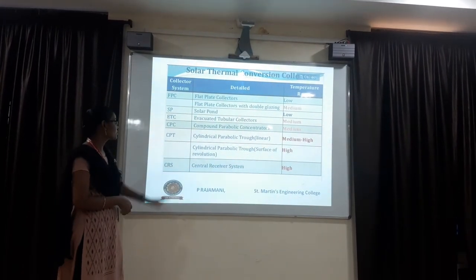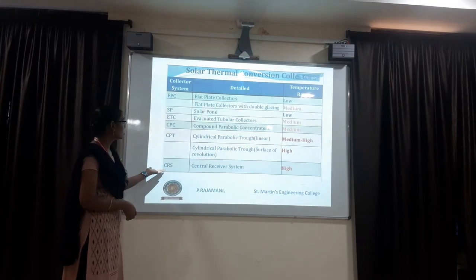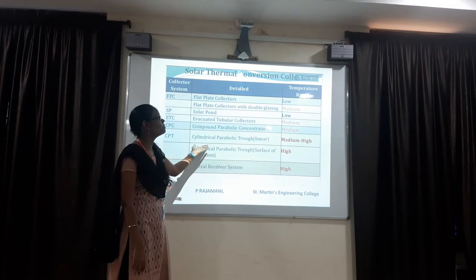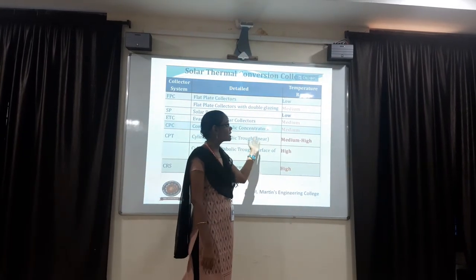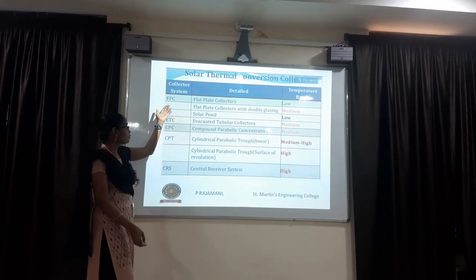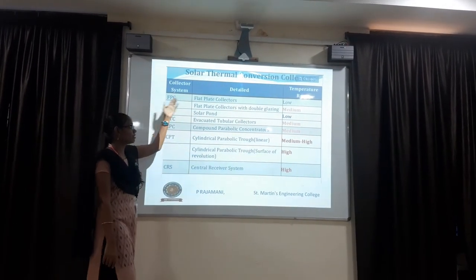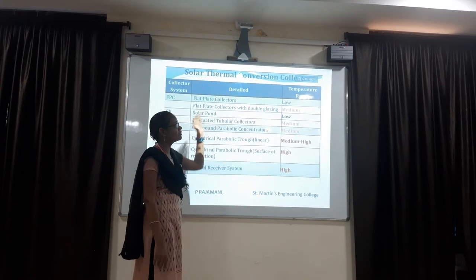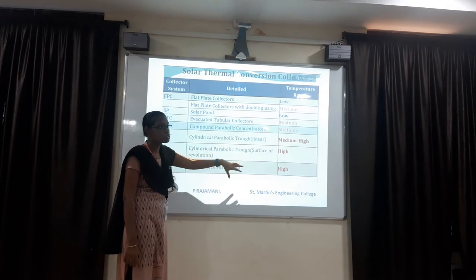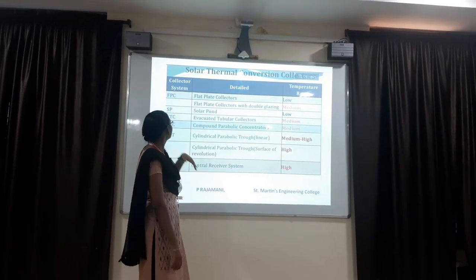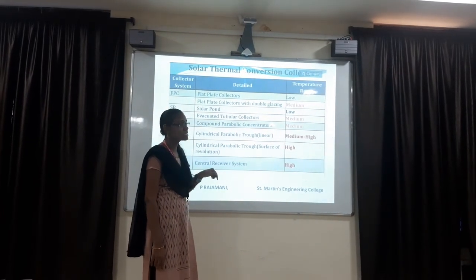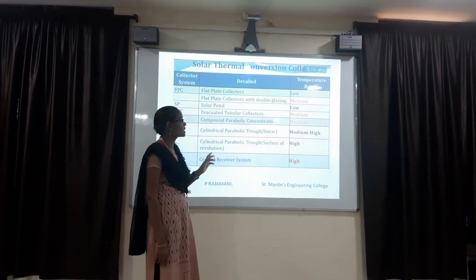Looking at these collector systems and their temperature ranges: First, FPC - flat plate collectors - used in very low temperature areas. Flat plate collectors with double glazing have a medium temperature range. SP means solar panels, and their temperature range is equal to very low.